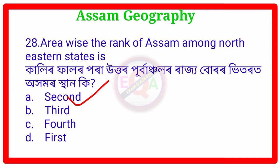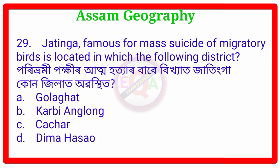Question 29. Jatinga, famous for the mass suicide of migratory birds, is located in which of the following districts? The answer is Option D: Dima Hasao (Mahasav).